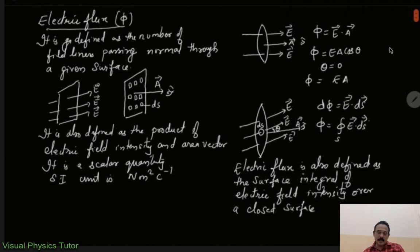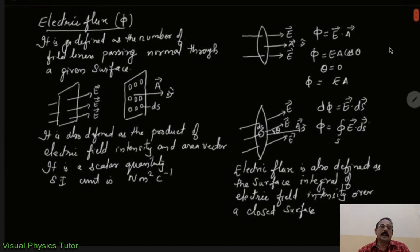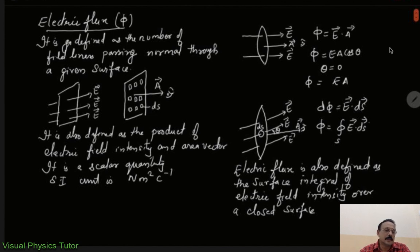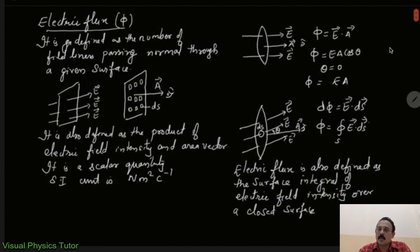So the electric flux can be defined in three different ways: it is defined as the number of field lines passing normal through a given surface; it is also defined as the product of electric field intensity and area vector; and electric flux is also defined as the surface integral of the electric field intensity over a closed surface. Hope you have understood this simple concept. Thanks for watching.